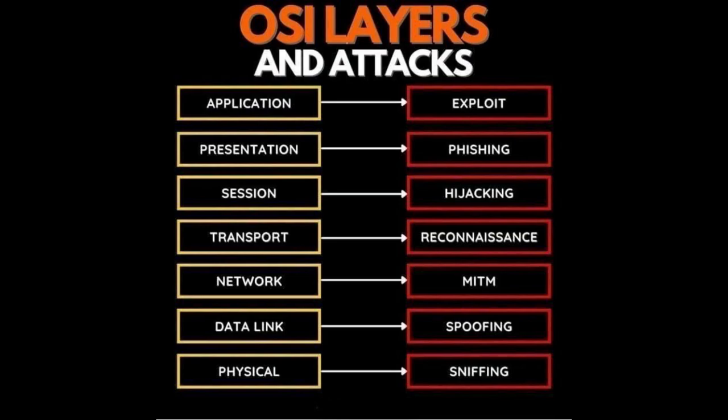The Application Layer is the most important topic — it is where users interact and includes various types of application protocols. Types of attacks at this layer include SQL injection, cross-site scripting, phishing, and other software vulnerabilities. It's important to note that many network attacks can span multiple layers, as a vulnerability in one layer can affect others.